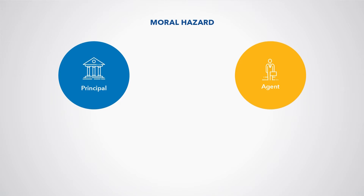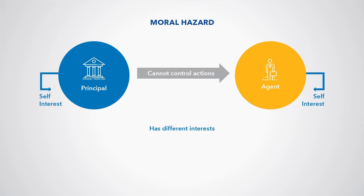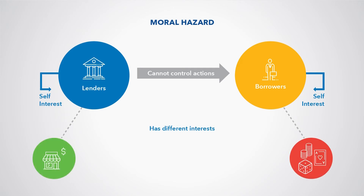Moral hazard arises when the principal has limited ability to control the agent's actions, and the actions that are best for the agent and the principal are not the same. In credit markets, lenders worry that borrowers will use loans to make risky investments and then default if their investments fail. If lenders try to solve this problem by asking for collateral, then they could exclude poorer clients.